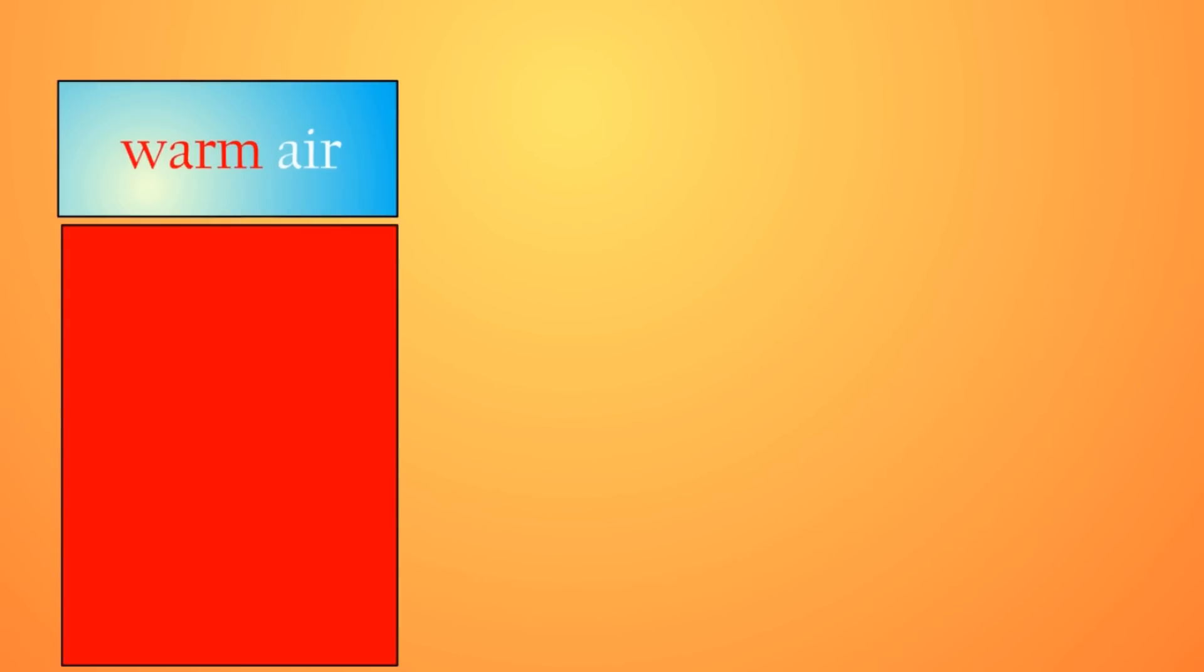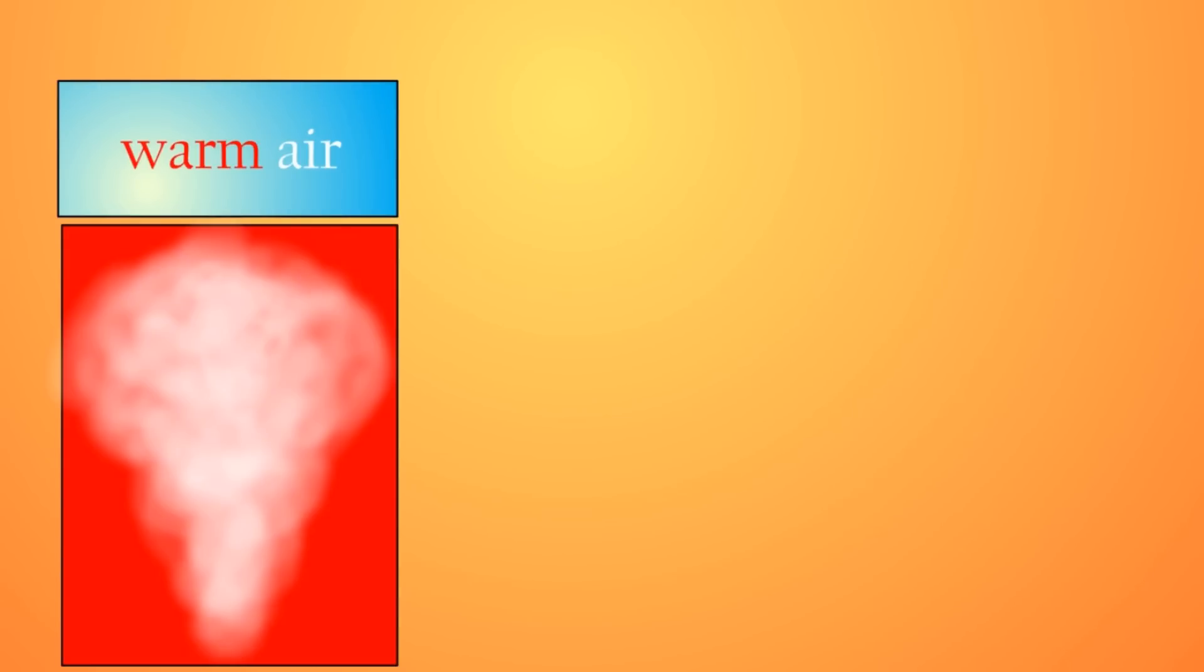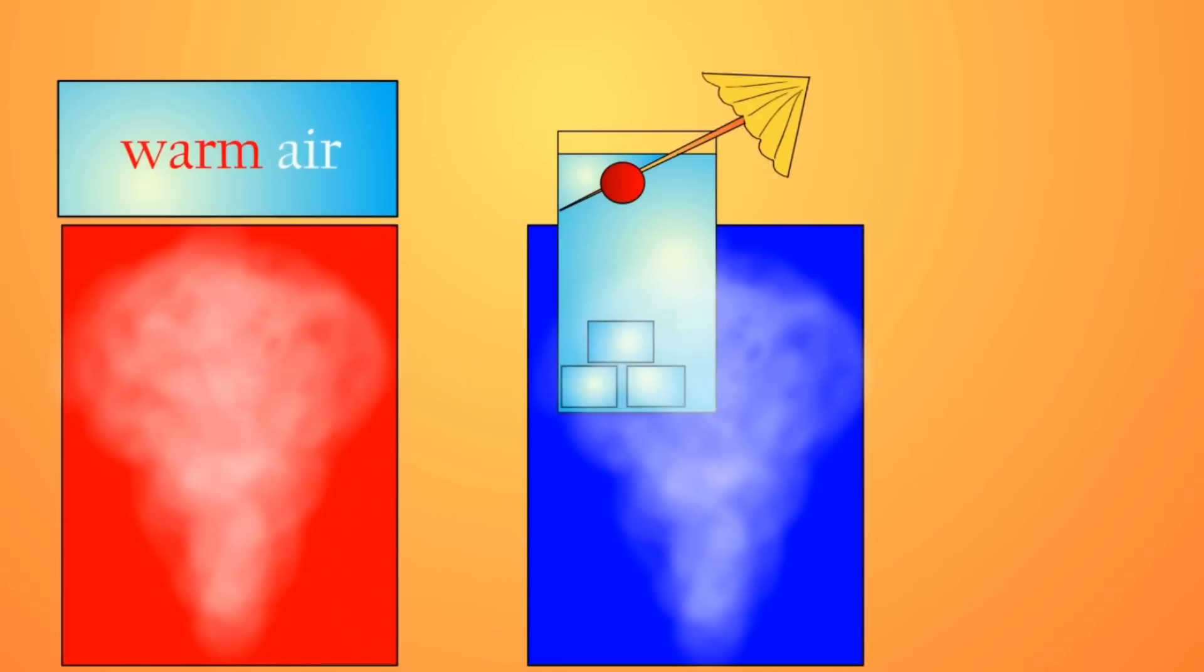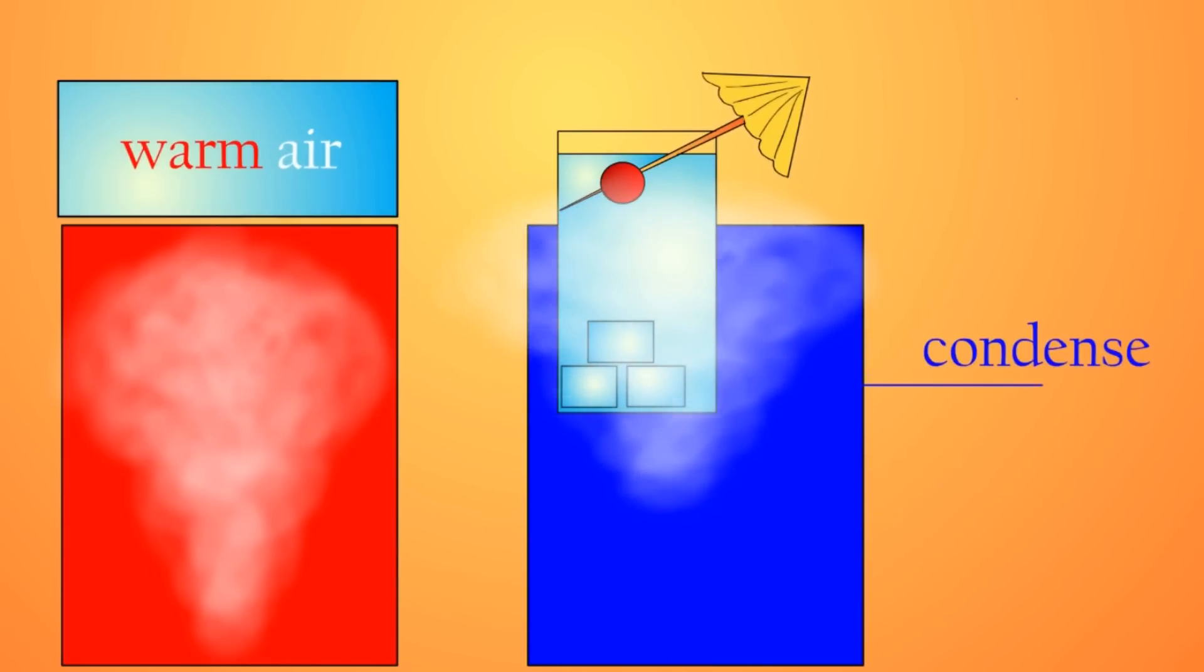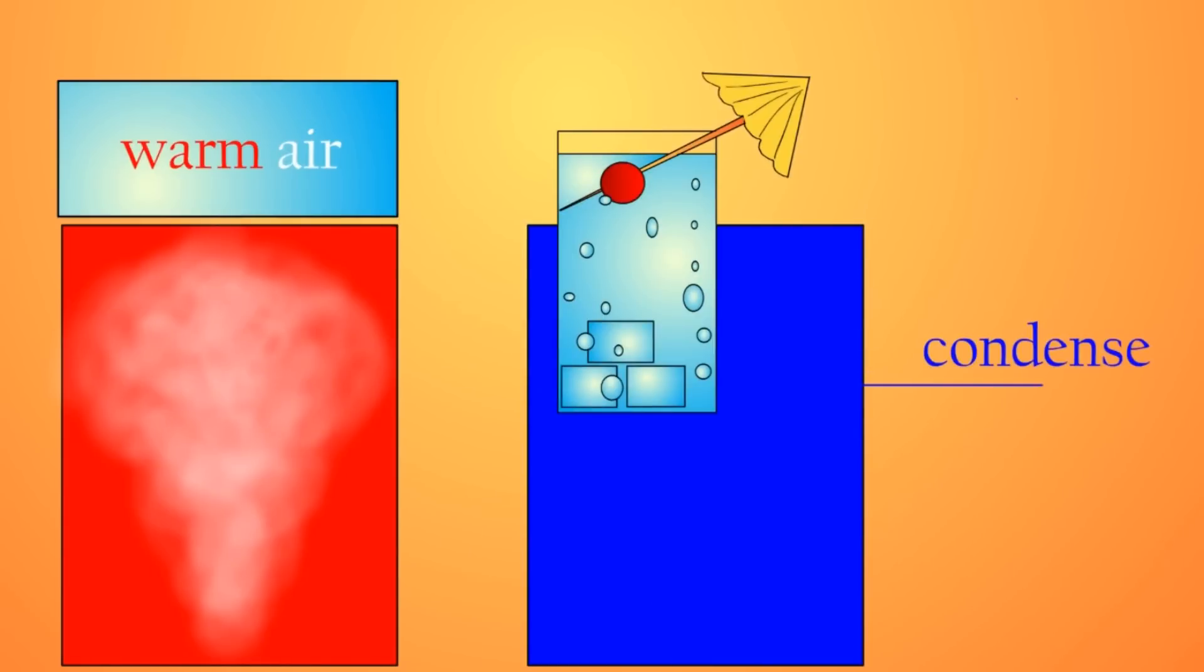Warm air can hold a lot of water vapor, but when air comes into contact with something cold, like a glass of ice water, the air can't hold as much water, and the water vapor will condense out, forming water droplets. The water on your glass actually comes from the air itself.